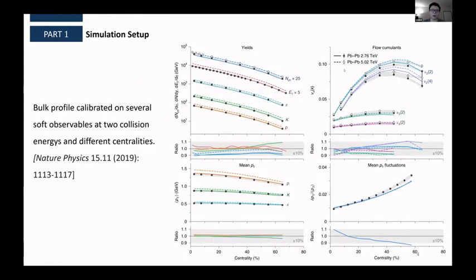And again, all the soft medium-related parameters will be calibrated on soft hadronic observables using Bayesian analysis. So this is our results of calibrating to the soft observables at two different collision energies, like 2.76 TeV and 5.02 TeV, and across different centralities. And you can see after the calibration, the agreement between the experimental and our model calculations are quite well.